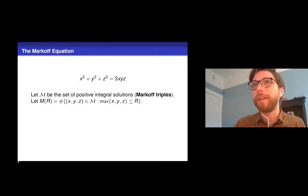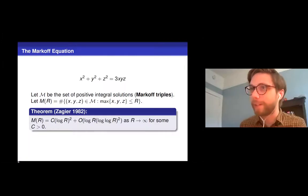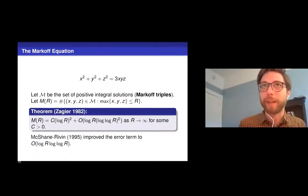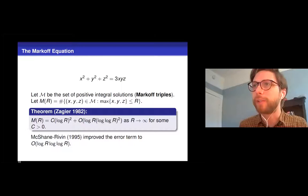So the most famous, or one of the most famous results here is a result by Zagier in 1982, who said that this counting function is approximately c times log r squared. And there's also this nice big O error term here, log r times log log r squared. And this got improved a little bit in 1995. McShane and Ribenboim trimmed off a little bit of that big O error term, shaved off a factor of log log r.